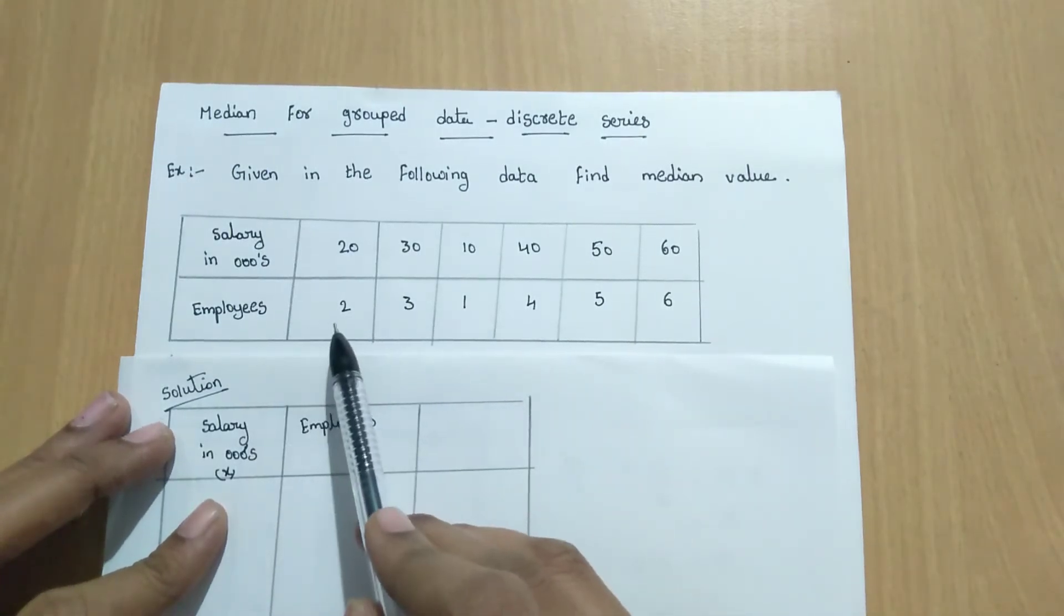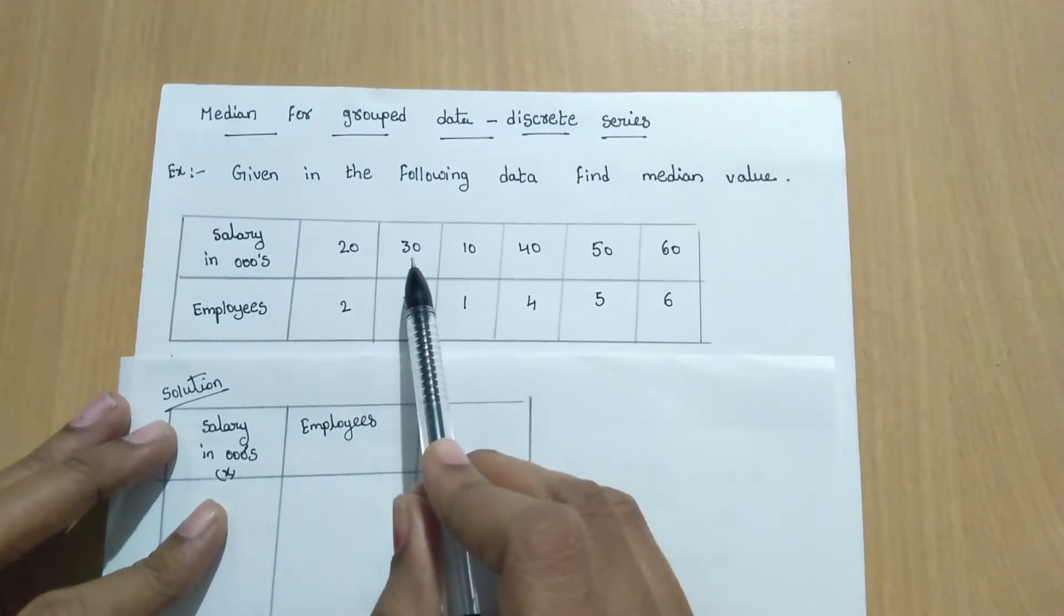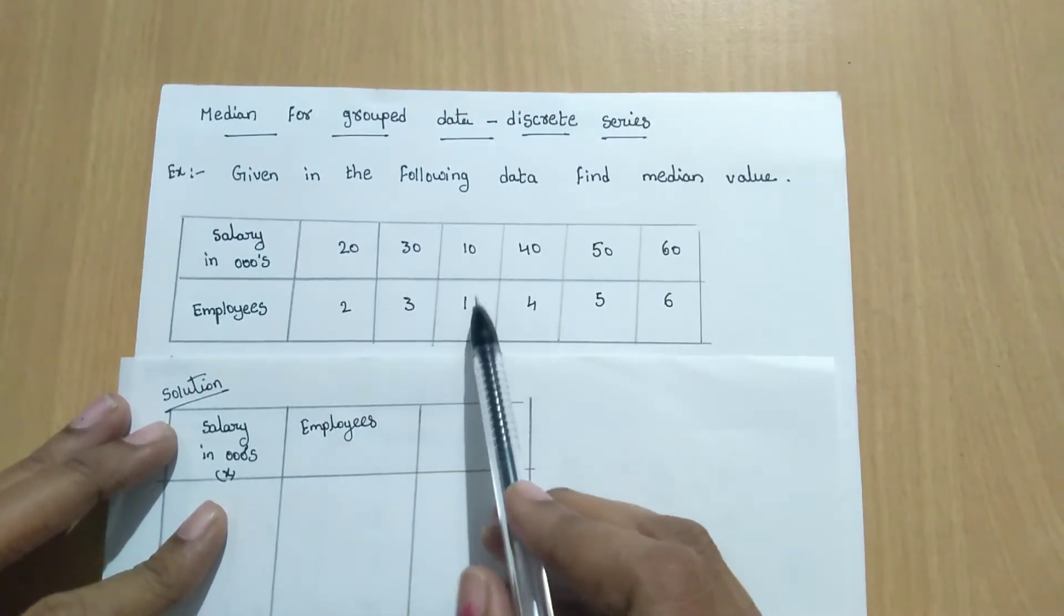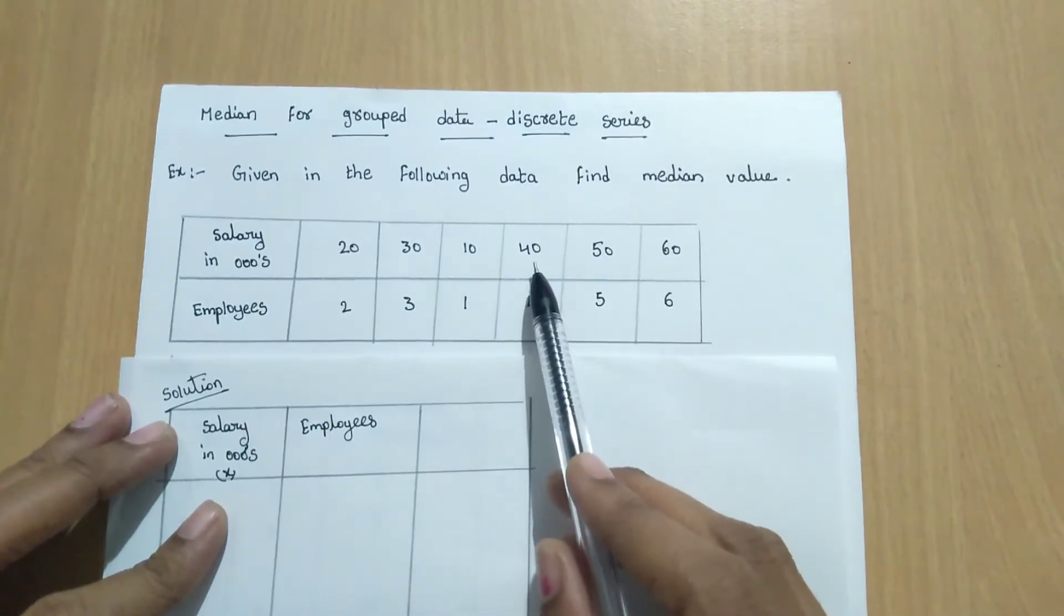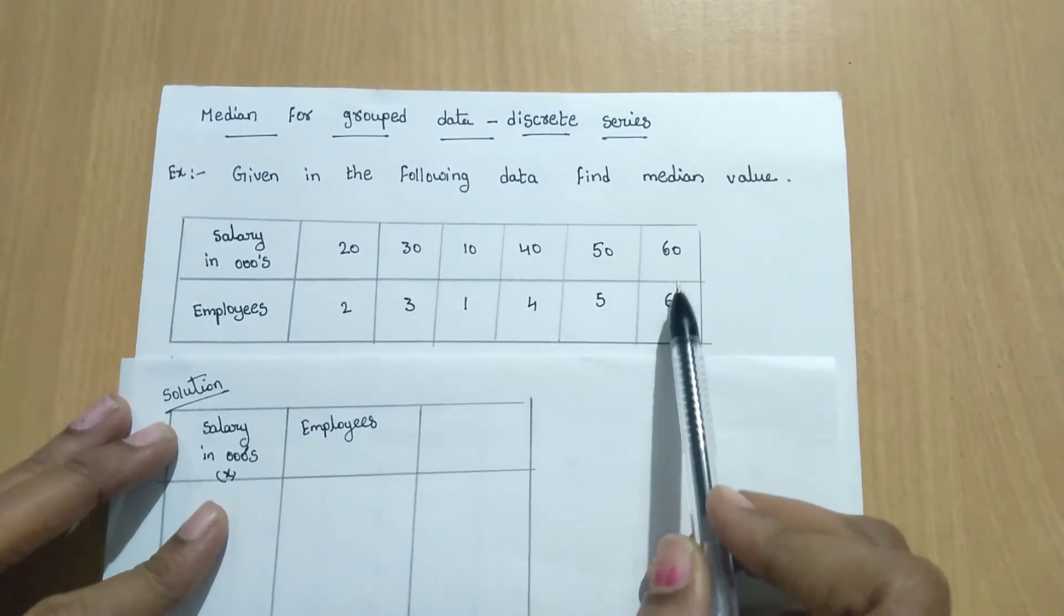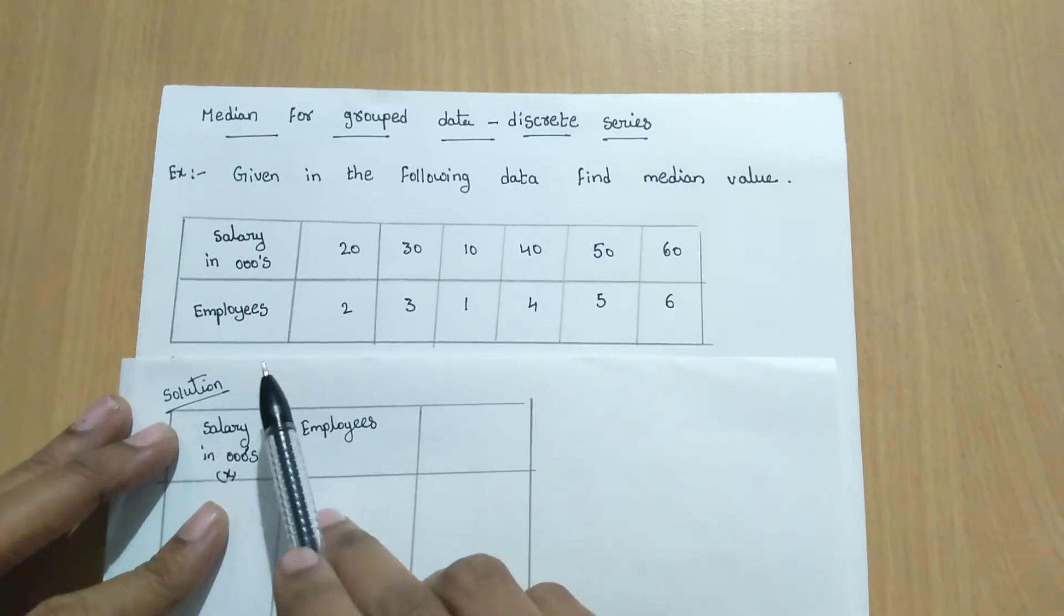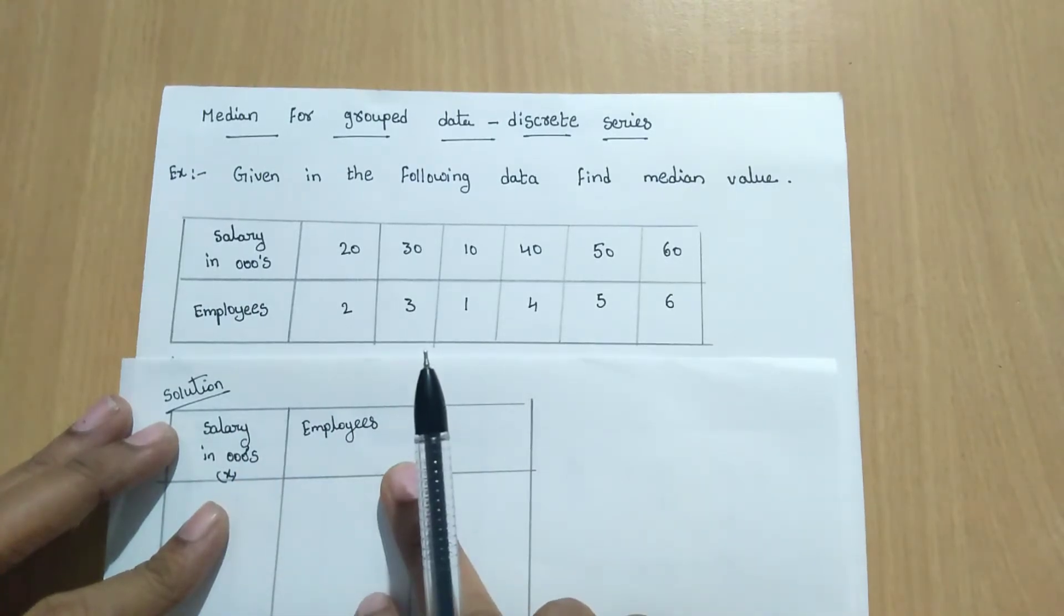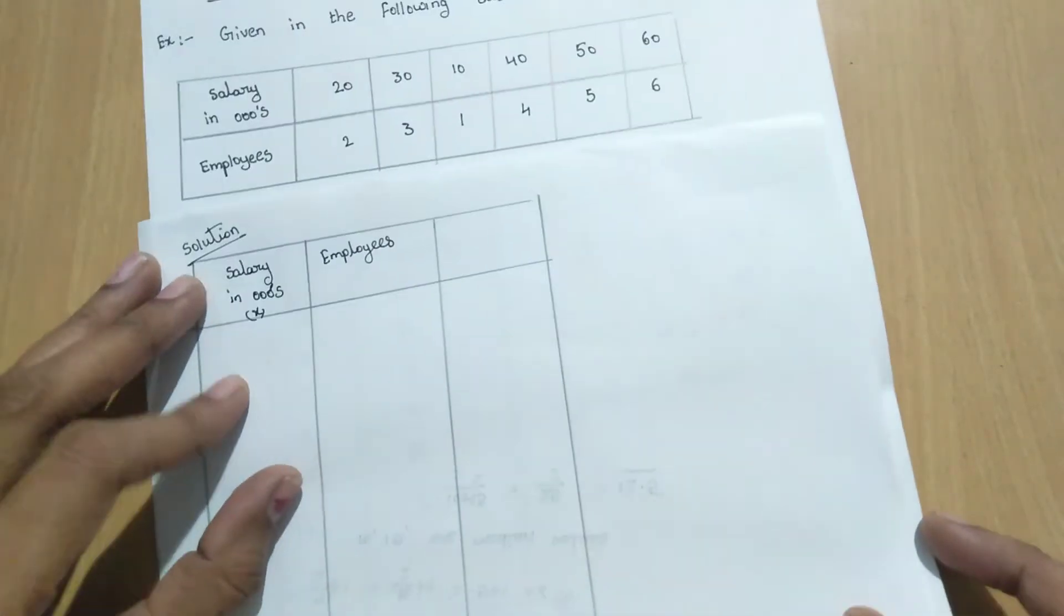That means 2 persons have 20,000 salary and 3 persons have 30,000 salary and 1 person has 10,000 salary and 4 persons have 40,000 salary and 5 members have 50,000 salary and 6 members have 60,000 salary. This is the problem. Now we have to find out the median for this discrete data. Next go to solution.